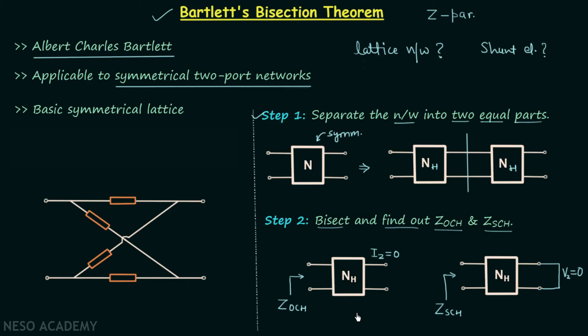Now after finding out Z OCH and Z SCH we are done with step number two and we move on to step number three, in which we construct basic symmetrical lattice using Z OCH and Z SCH. It is important to remember the positions of Z OCH and Z SCH in the basic symmetrical lattice.